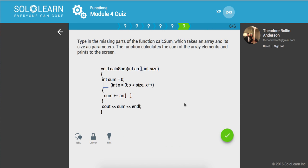Type in the missing parts of the function calc sum which takes an array and its size as parameters, and the function calculates the sum of the array elements and prints it to the screen. So let's go through this for loop and we'll grab r of x, and then we'll print out the sum at the very end.